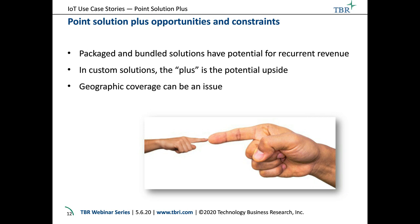In custom solutions, the plus is the potential upside — you may build something at a relatively low margin with the expectation that it can be expanded. The same is true with package solutions — you'll offer it at an attractive but profitable entry price with the expectation that expansion will bring margin expansion. When you build a solution for a specific location and want to be able to expand, you have to account for geographic coverage — a particular issue with communications and the sending of data wirelessly between sensors and local or distant processing.